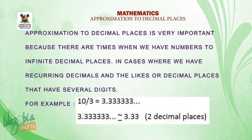For example, 10 divided by 3 gives us 3.333333 to infinity. We need to shorten these to a reasonable number of decimal places. In some cases, the number of decimal places is given in the question. So if we give our result as 3.33, it means we have approximated to 2 decimal places.